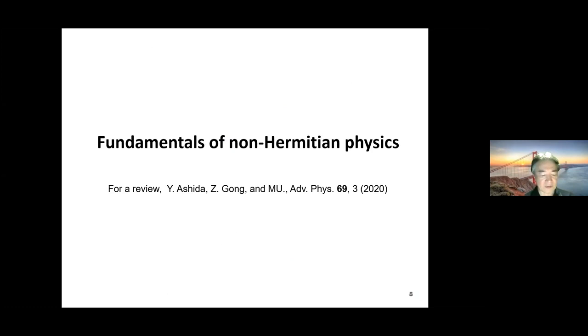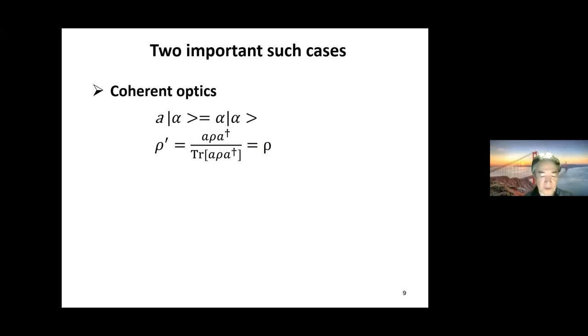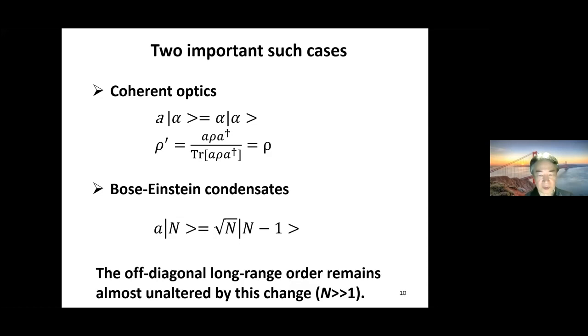An important subcategory of beyond Hermitian quantum physics is so-called non-Hermitian physics. There are two important cases in which quantum jumps can be ignored and hence non-Hermitian description is justified. One is coherent optics, because a coherent state is an eigenstate of the annihilation operator and hence invariant against quantum jumps. Another example is Bose-Einstein condensates.